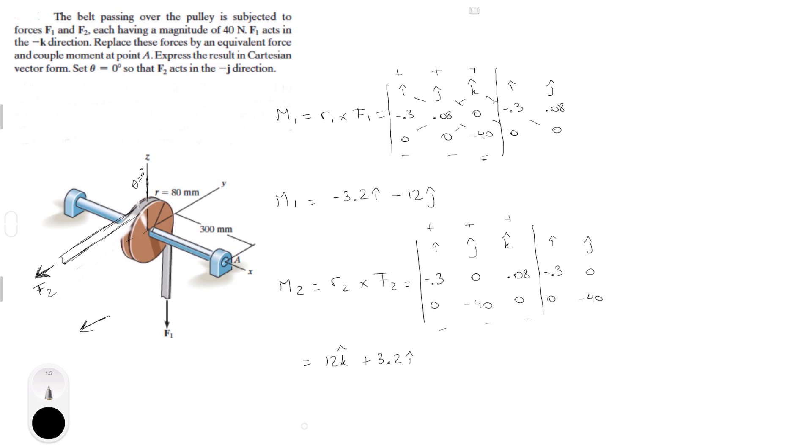So the sum of the moments are on A is equal to M1 plus M2. So you add those two Cartesian vectors together, which are this one and this one. And that will give you minus 12 in the j plus 12 in the k. Sum of the moments are on A is equal to.